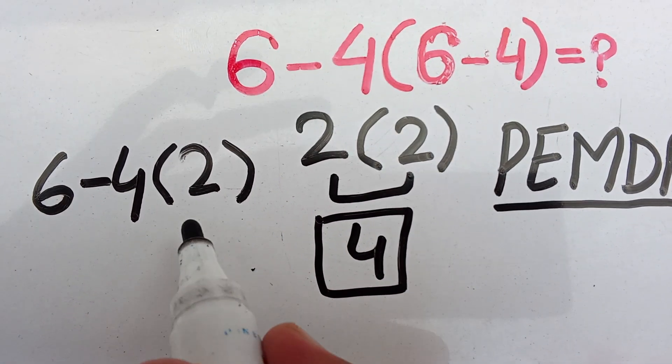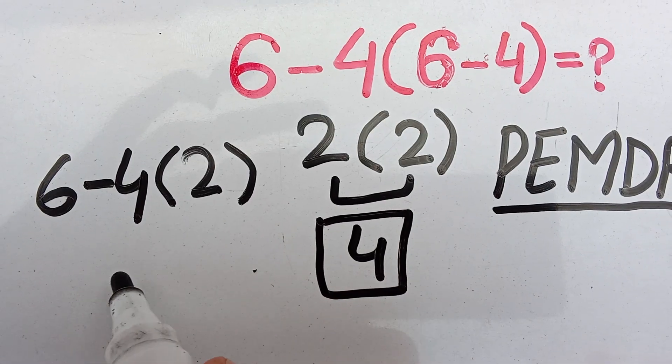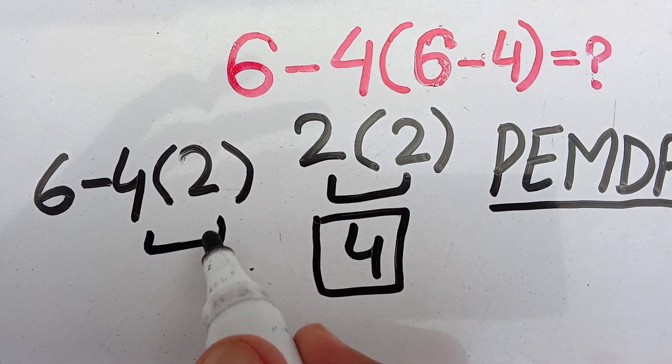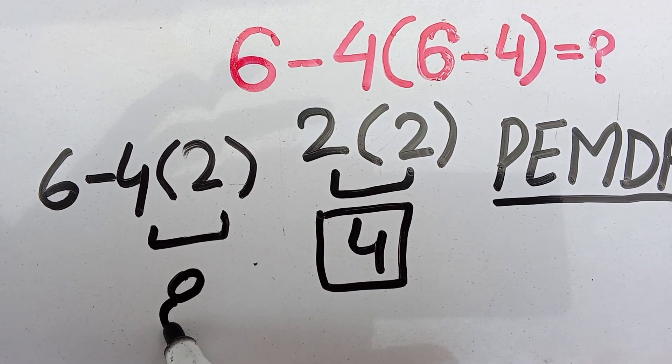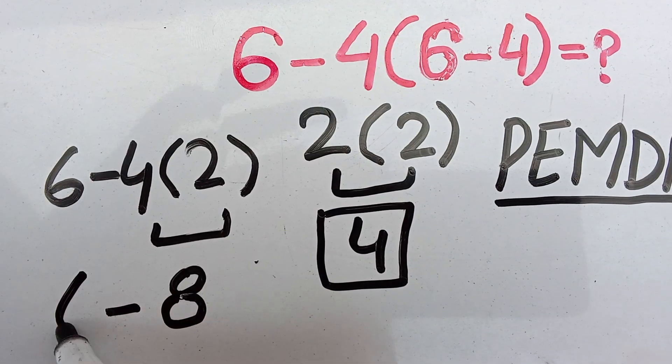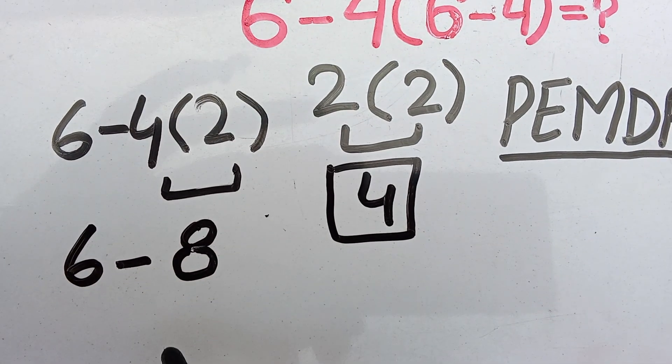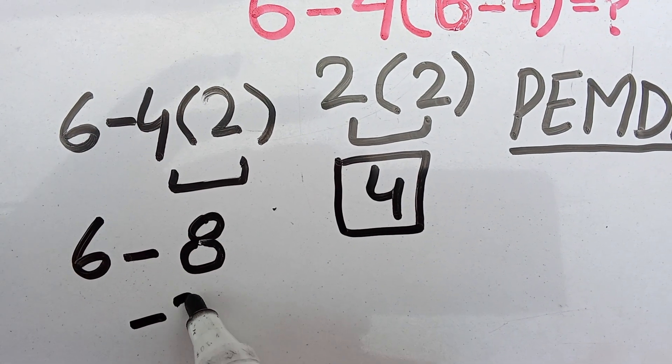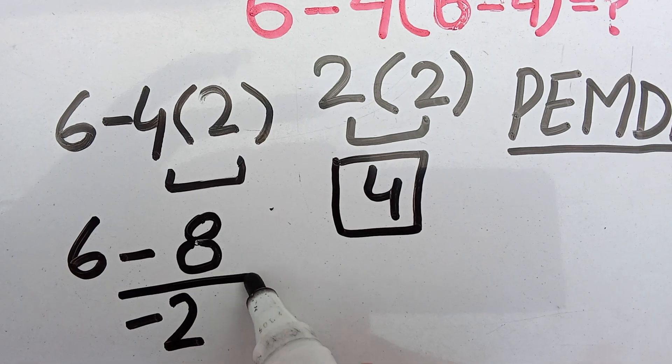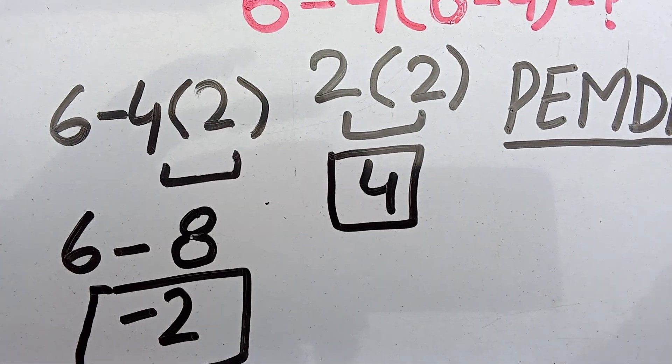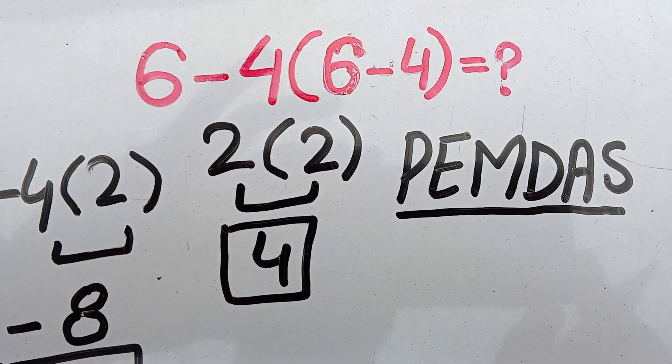Now we can solve multiplication. So 4 times 2 which is equal to 8. Then 6 minus 8 which is equal to minus 2. So this is the final answer of this expression.